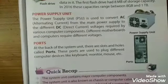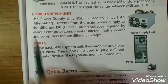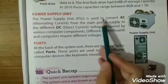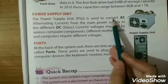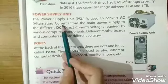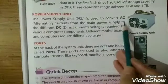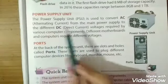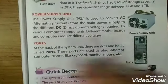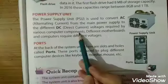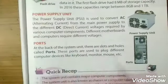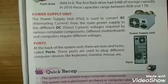The next is the power supply unit (PSU). It is used to convert AC (alternating current) from the main power supply into different DC (direct current) voltages required by various computer components. Different motherboards and computer components require different voltages.